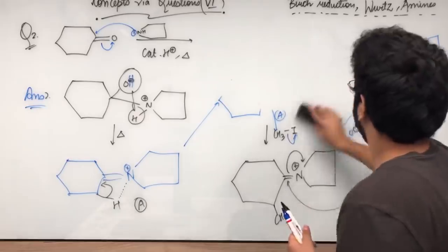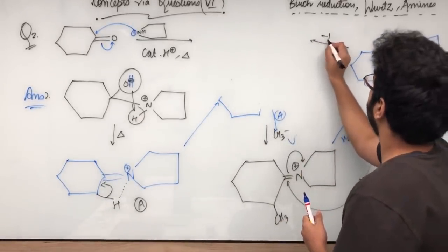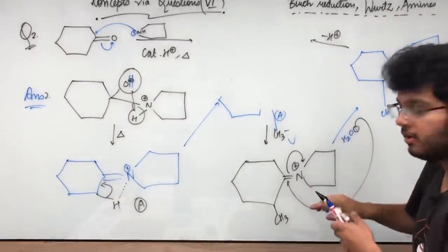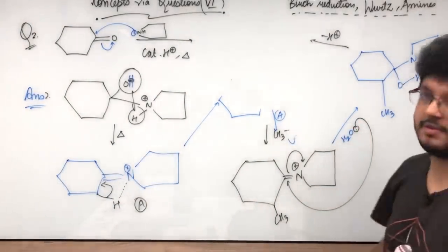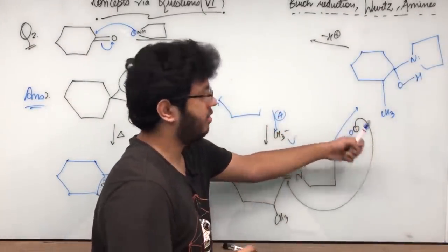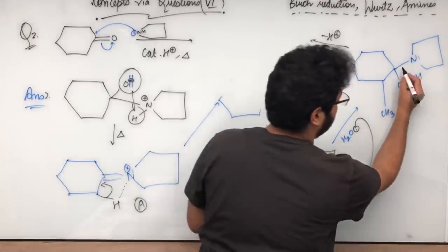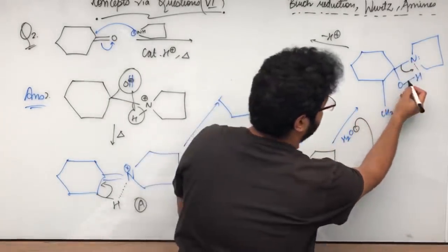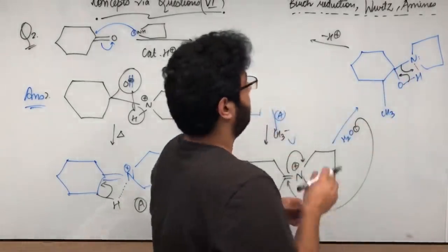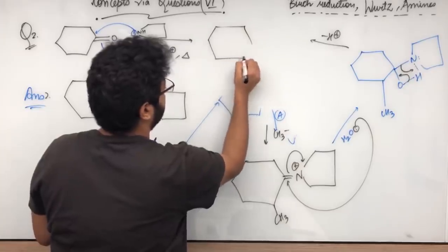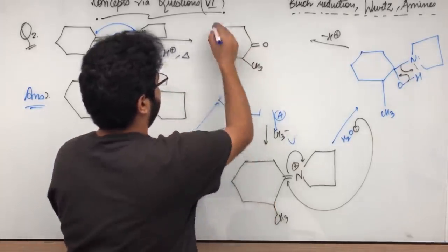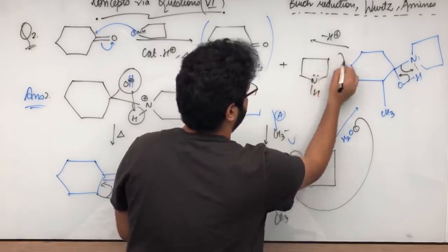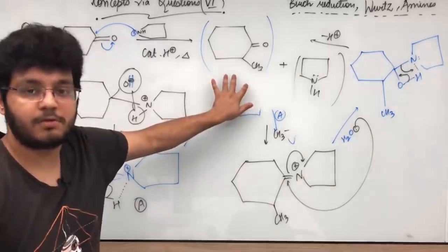What will be done from here? Removal of H happens. So removal of H plus happens. So removal of H, here what? C double bond O, CH3. This is one of the thing which was a catalyst that you have in question. This will be formed finally.